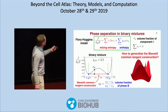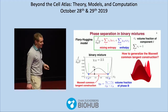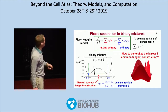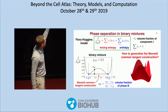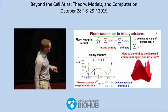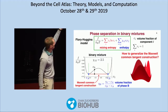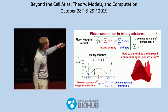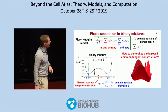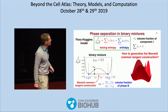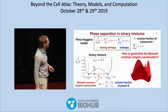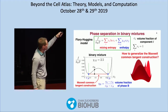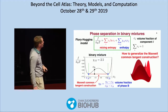For the examples I will show, we use the Flory-Huggins regular solution model. The free energy density, normalized by kBT, has two parts: one is the mixing entropy, and one is the interaction energy between molecules. Here C_i are the volume fractions of different molecules, where i goes from one to n for n different components. We assume the system is incompressible, so the sum of all volume fractions equals one.